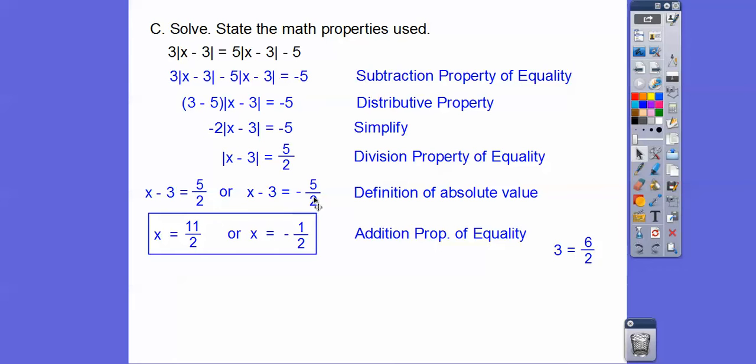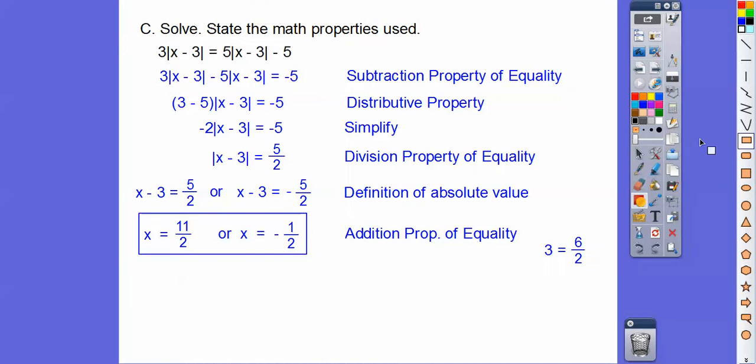We add 6 halves to 5 halves and get 11 halves. I made a mistake. So add 6 halves to the negative 5 halves. Let me change that real quick. So we get a positive 1 half, not a negative 1 half. That's a positive 1 half.